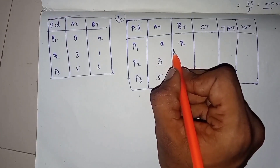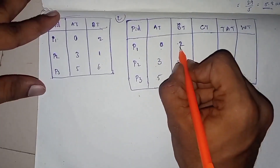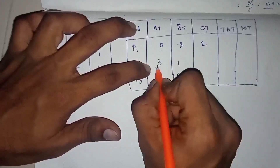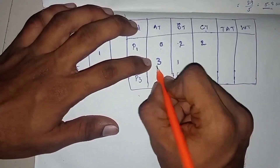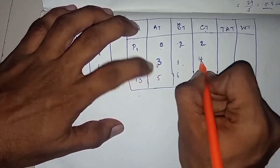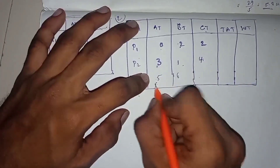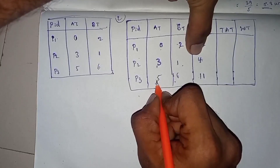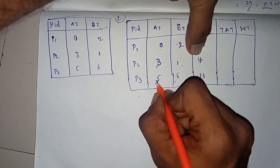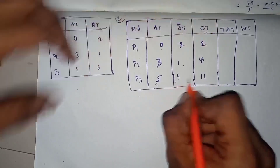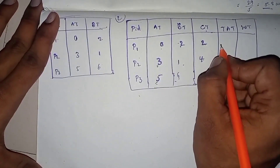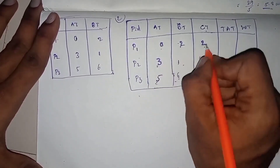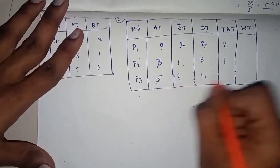We need to adjust the process and the previous time. Process 2 is 2. Arrival time is 3, so 2 is 3. 3 plus 1 is 4. 4 is 5, maximum is 5, 5 plus 6 is 11. So the completion time and arrival time — we need to adjust the maximum time. So 5 plus 6 is 11. Turnaround time: TAT is equal to CT minus AT. 2 minus 0, 4 minus 3, 11 minus 5 is 6.